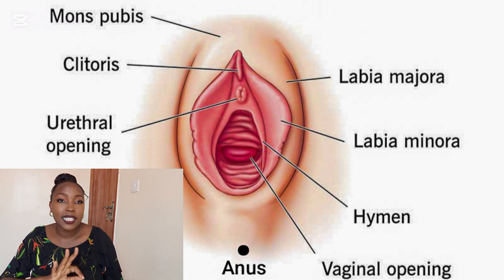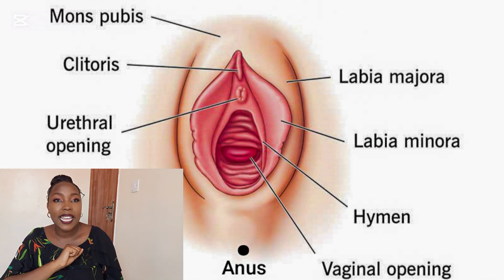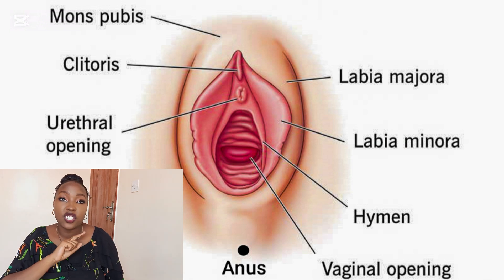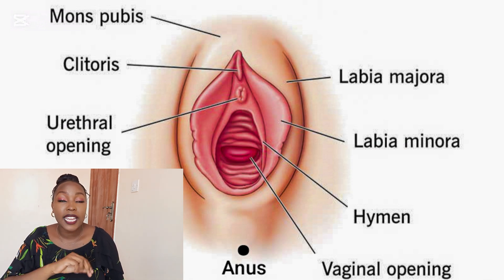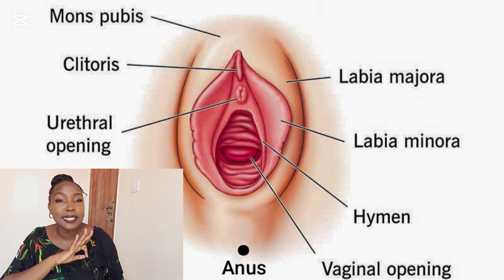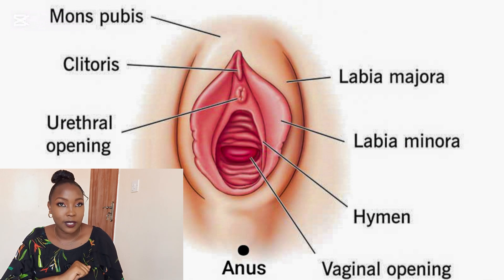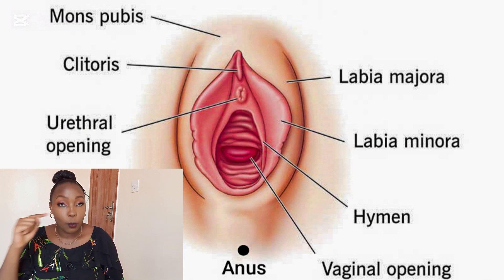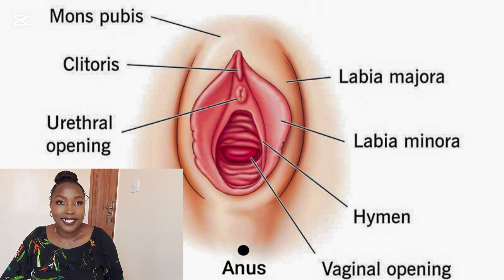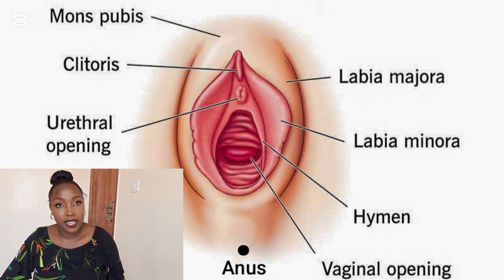Finally, we are going to look at these three openings. They are very distinct in structure and function, and they are connected to three distinct systems of the body. We have the urethral opening, then we have the vaginal opening, and we have the anal opening or the anus.